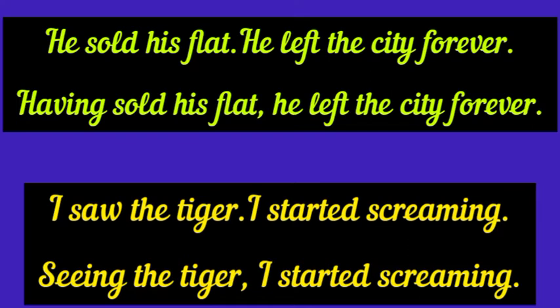Having sold his flat, he left the city forever. In the same way, another pair of sentences: I saw the tiger, I started screaming. Here I'm going to join these two sentences using a present participle. Seeing the tiger, I started screaming. Here, seeing the tiger is the present participle.